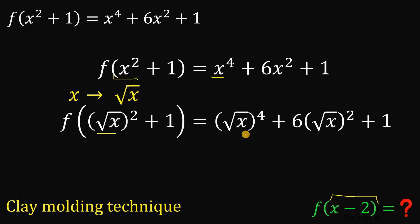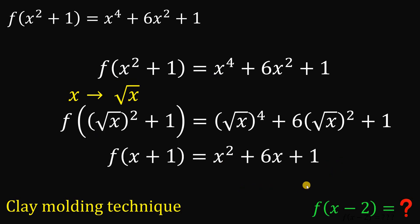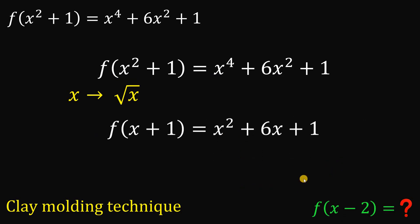So this x raised to the fourth power becomes square root of x raised to the fourth power, plus 6 times square root of x squared, and add 1. Simplifying this, we have f of x plus 1 equals x squared plus 6x plus 1. This is now our resulting function after the first molding.